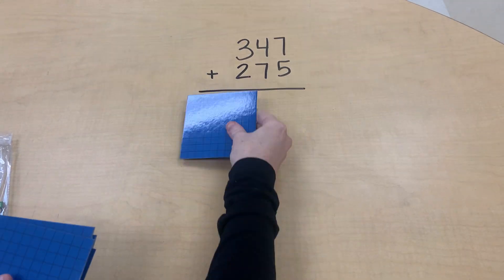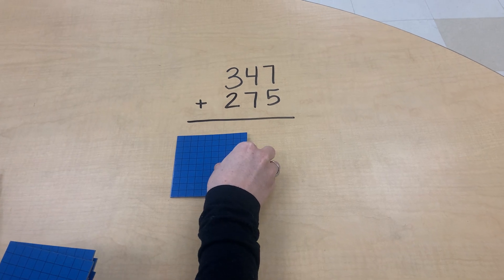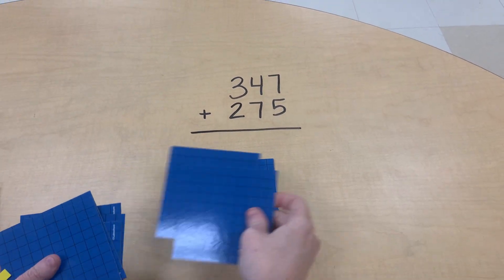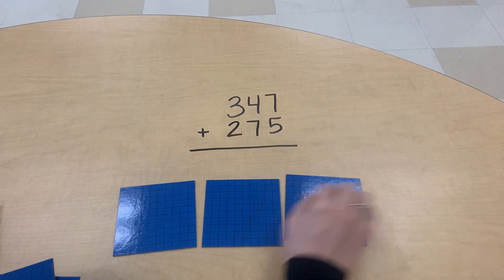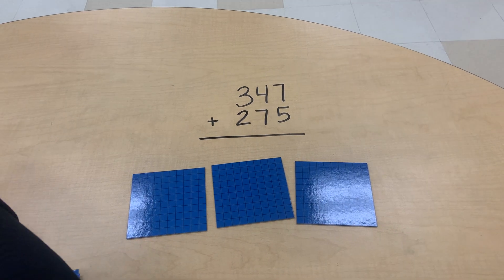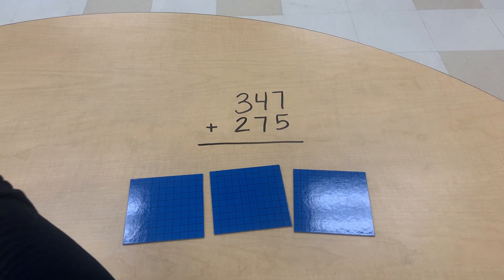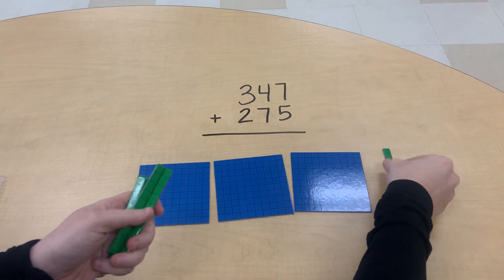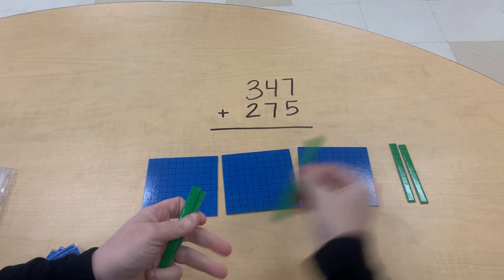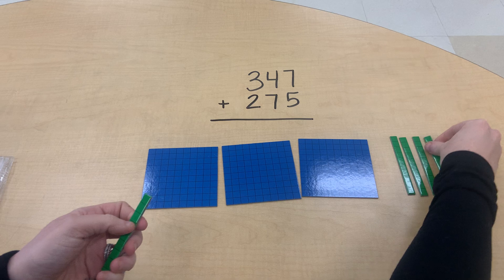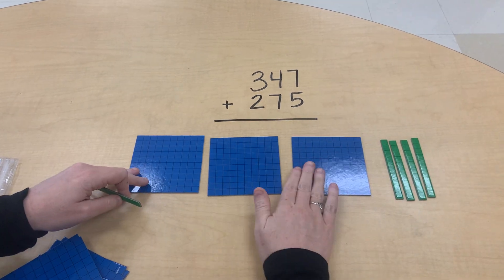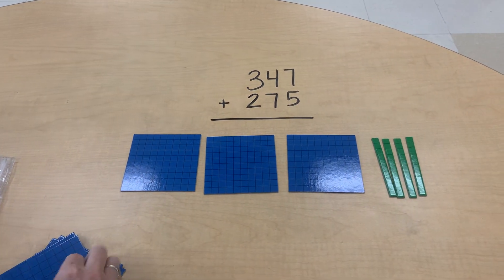So first we ask our students to compose the numbers, so we have three hundred, so three hundreds, four tens, one, two, three, four, and seven ones.